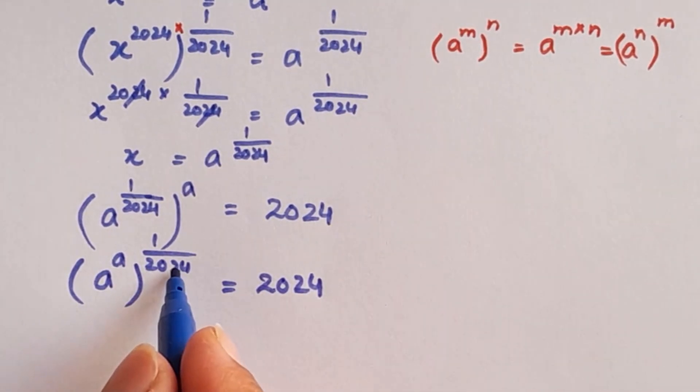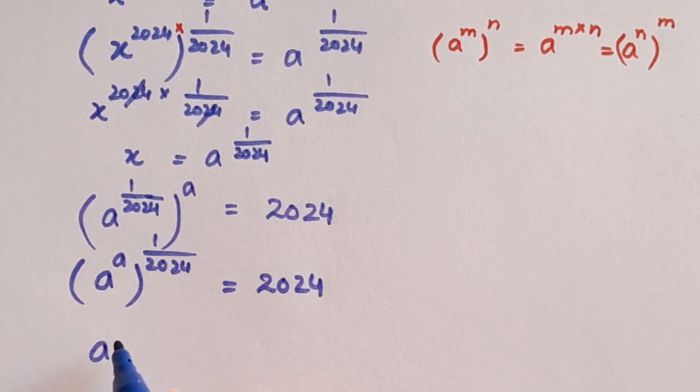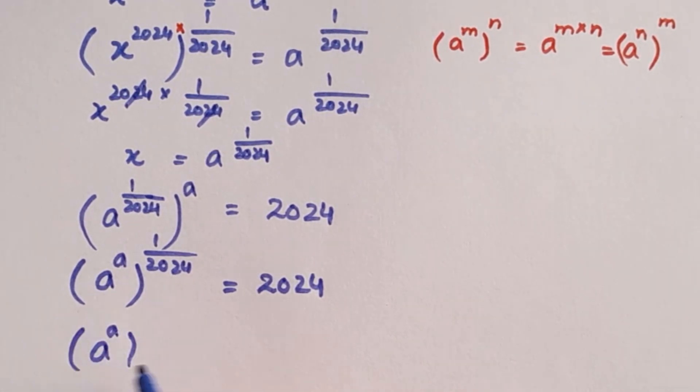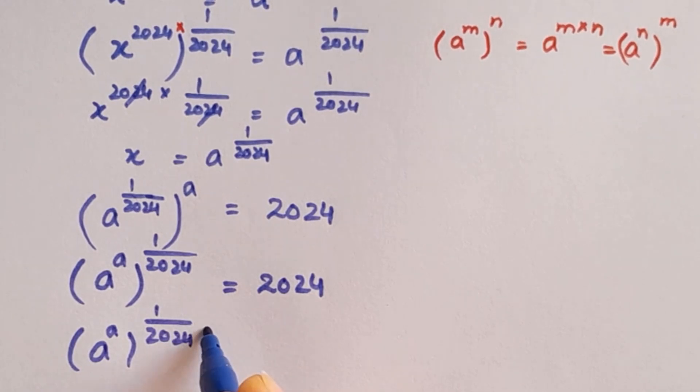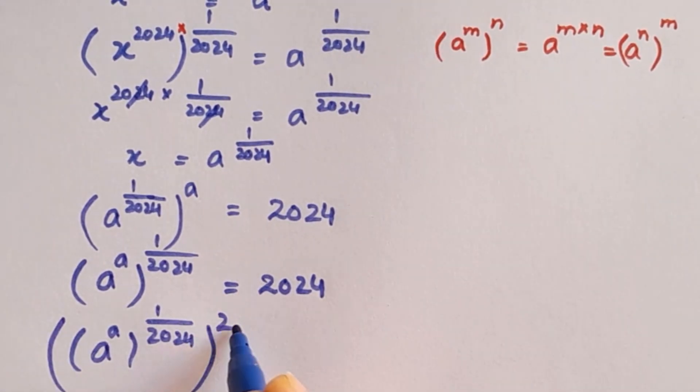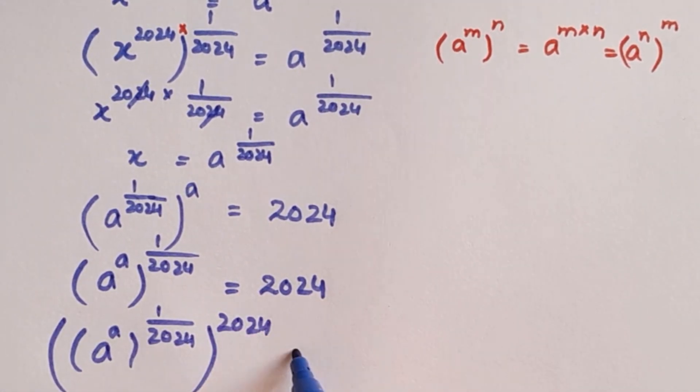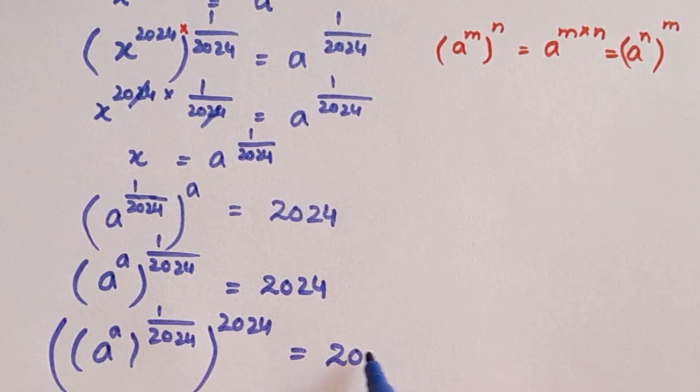To eliminate this 1 divided by 2024, we are going to take power 2024 on both sides of this equation. Whole to the power 2024 equals right hand side 2024 to the power 2024.